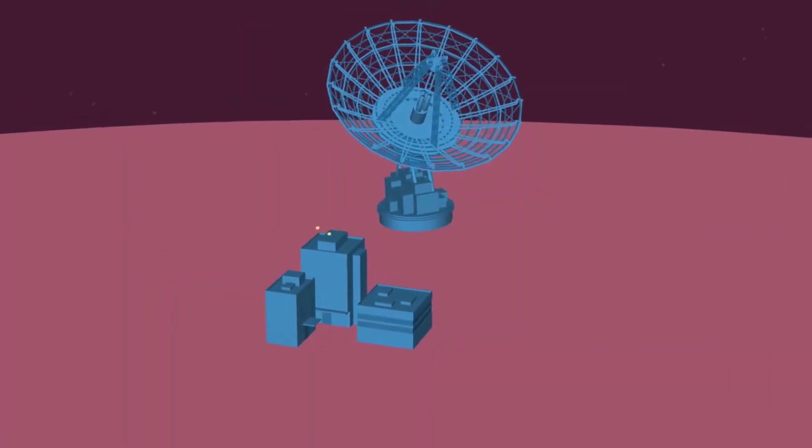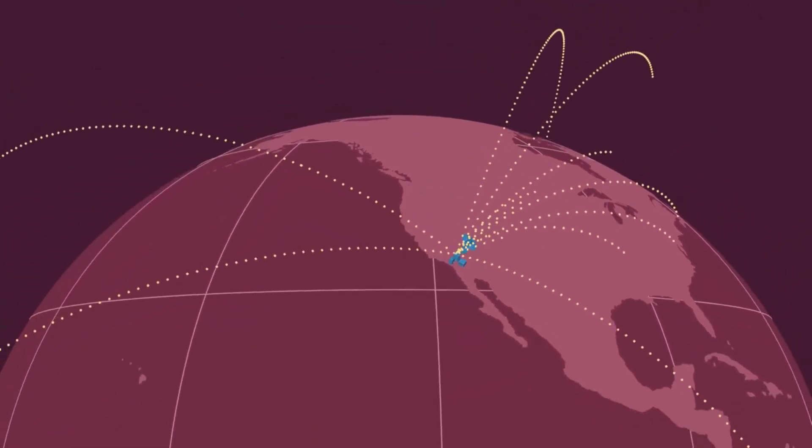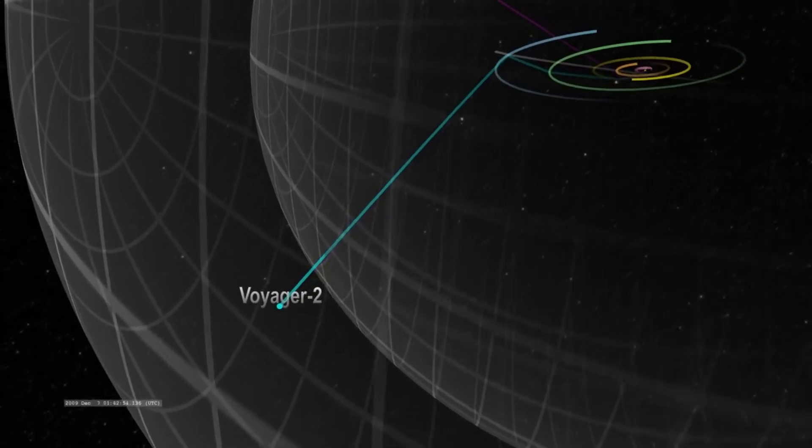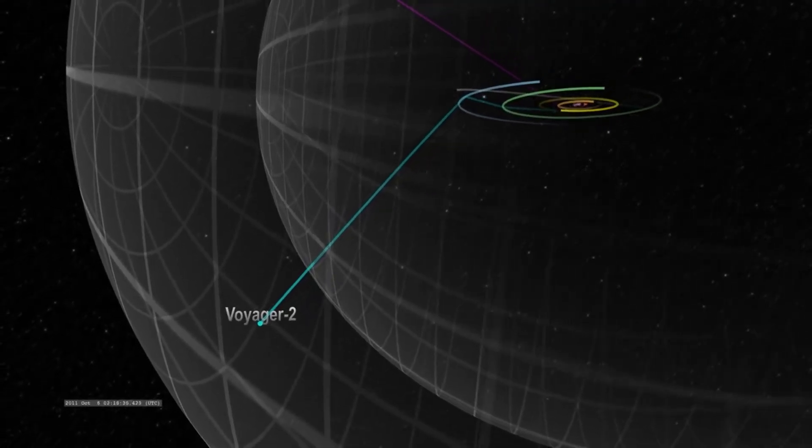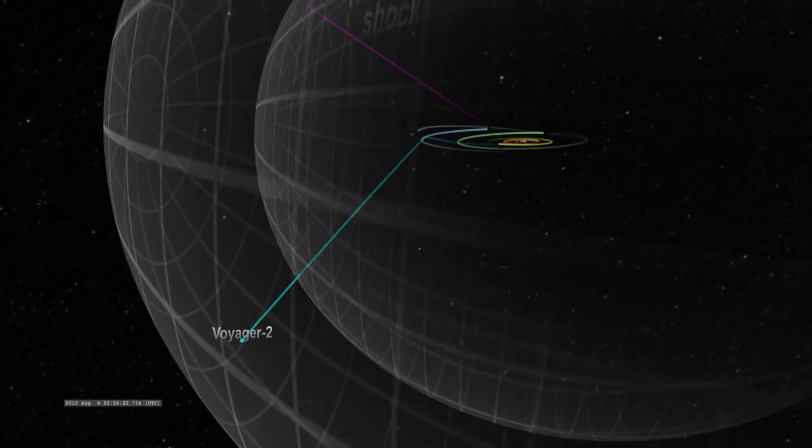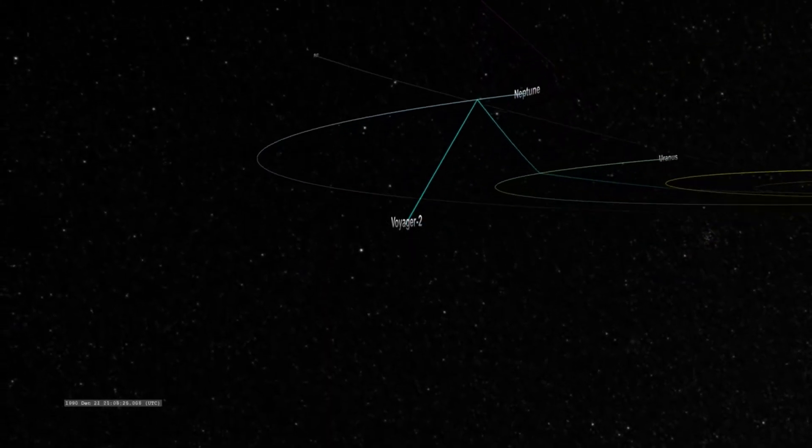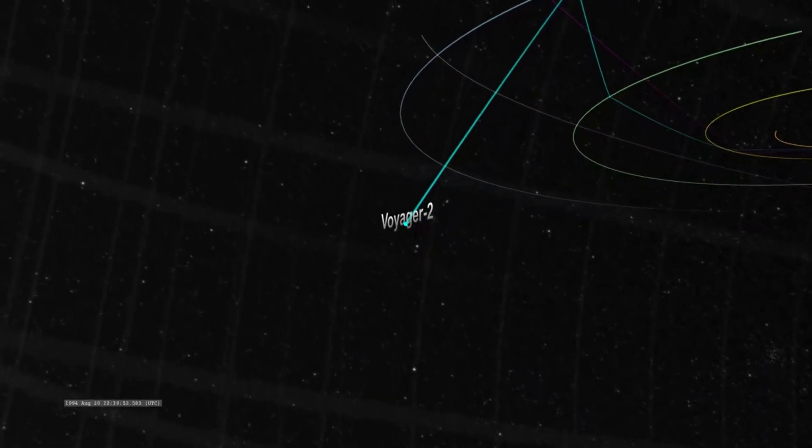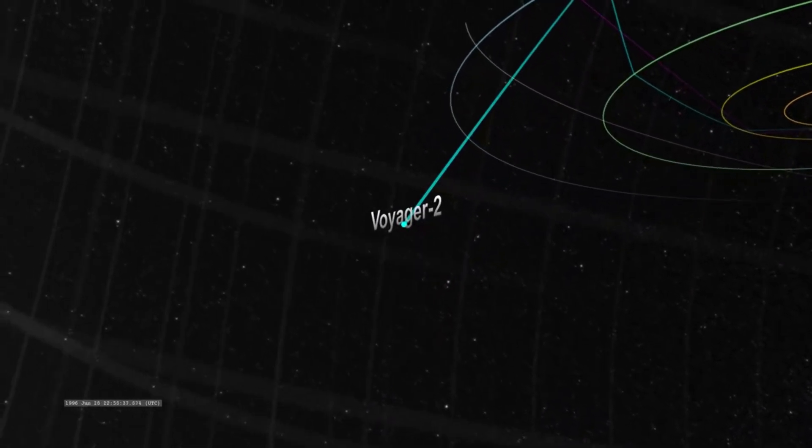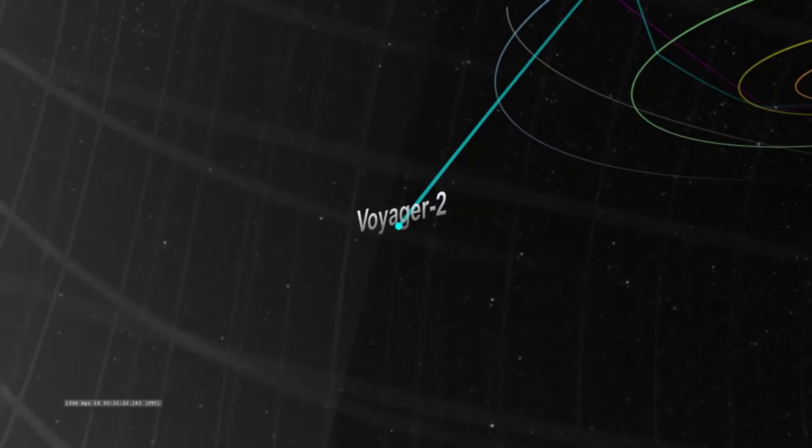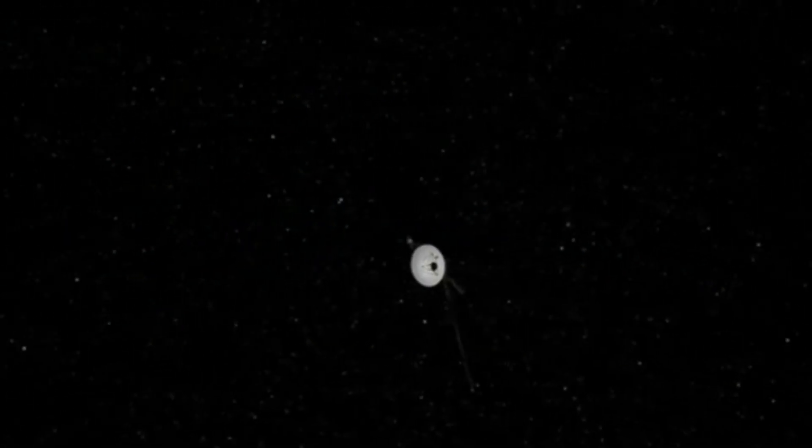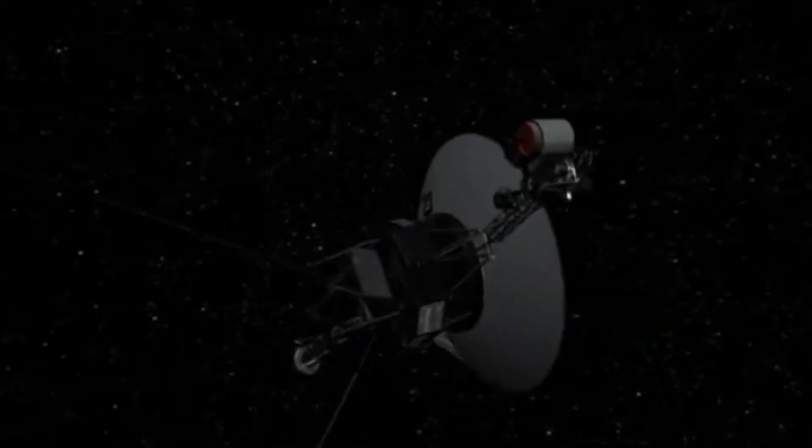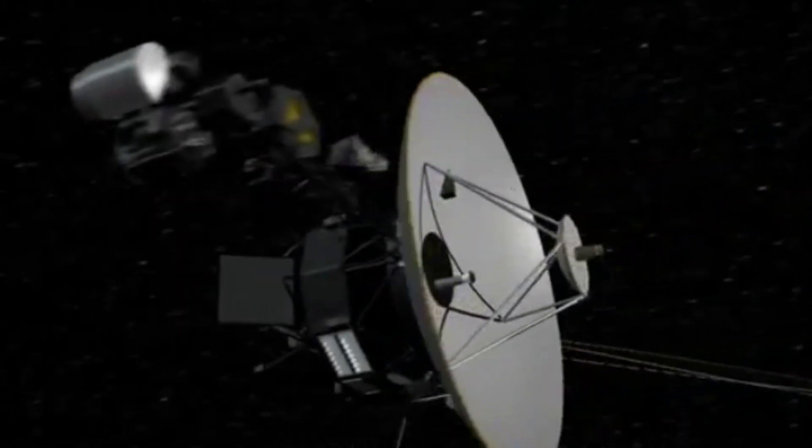This leads us to yesterday the 4th, when the agency's Deep Space Network facility in Australia sent the equivalent of an interstellar shout more than 12.3 billion miles or 20 billion kilometers to Voyager 2, instructing the spacecraft to reorient itself and turn its antenna back to Earth. To put in perspective the distance between Voyager 2 and Earth, with a one-way light time of 18.5 hours for the command to reach Voyager, it took 37 hours for mission controllers to learn whether the command worked. At 12:29 a.m. EDT on August 4th, the spacecraft began returning science and telemetry data, indicating it's operating normally and that it remains on its expected trajectory.